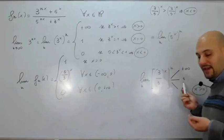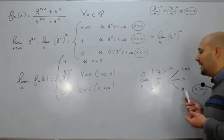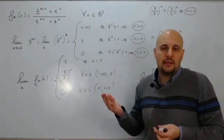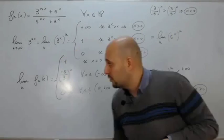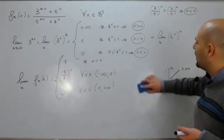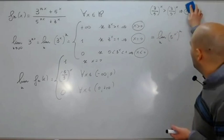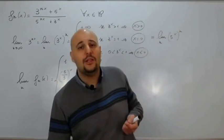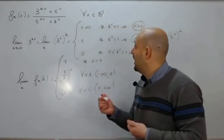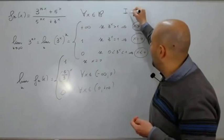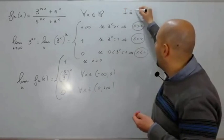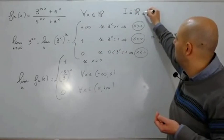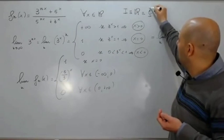È evidente che non potrà valere nemmeno 1 il limite per n→∞ di (3/5)^x alla n, perché se valesse 1 vorrebbe dire che x = 0, che non riguarda il caso che stiamo considerando. Faccio notare come l'insieme di definizione nel quale è definita la nostra successione di funzioni è tutto ℝ, coincidente, in questo caso, con l'insieme di convergenza puntuale.